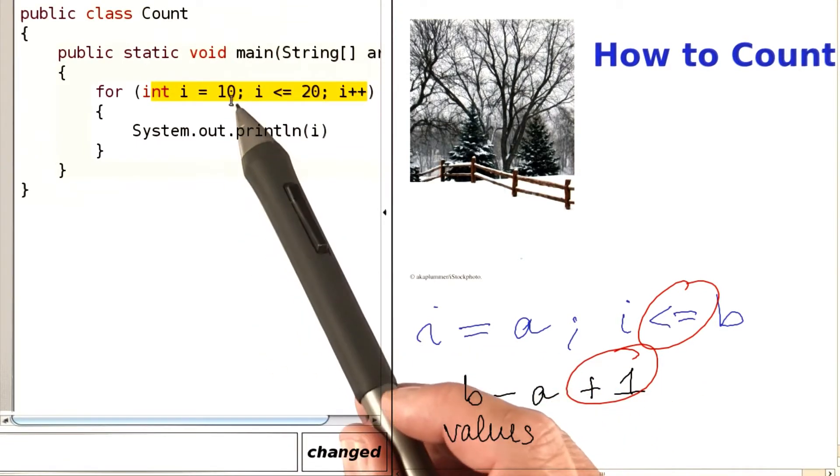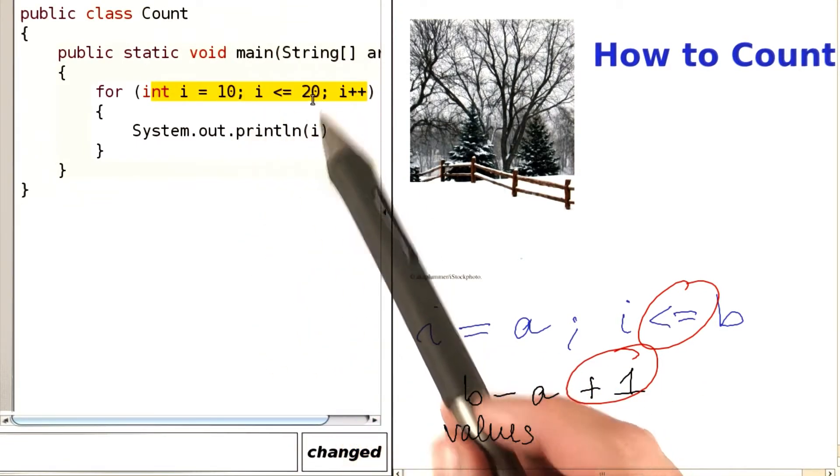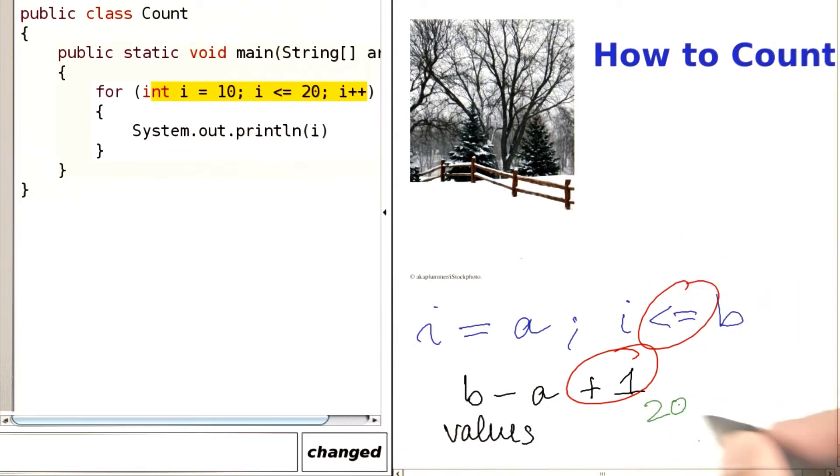For example, over here we start at 10, we go to 20, and we have 20 minus 10 plus one, that's 11 values.